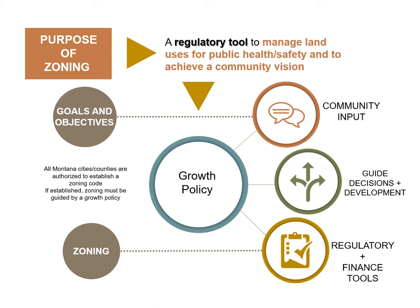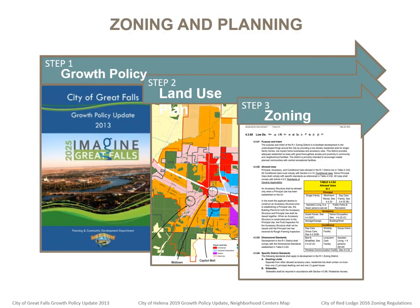Growth policies are implemented with a variety of actions and tools, including regulations. Zoning is a regulation enforceable by law. Its basis is in the growth policy which, in addition to goals and objectives, typically includes a land use plan that identifies existing and future land uses, either in text or with maps. The zoning ordinance is the regulation — it consists of details about the zoning in text and a map, guided by the general approaches in the growth policy's land use section.